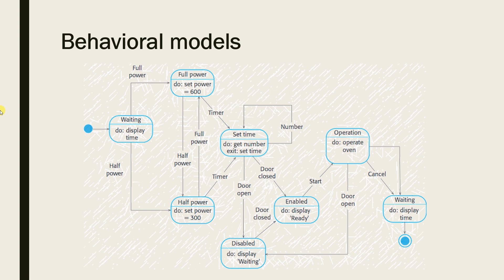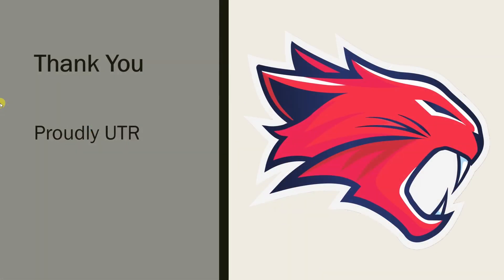For behavioral models we can use activity diagrams, sequence diagrams, and state diagrams. Those are the four kinds of models, and we can apply various UML diagrams to this classification of models.